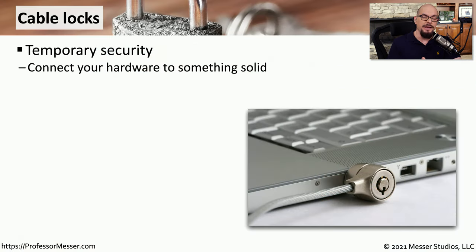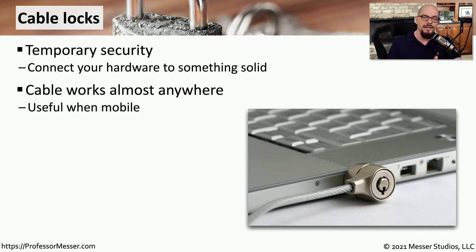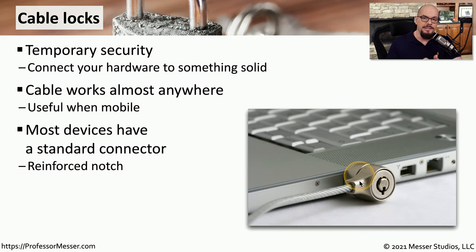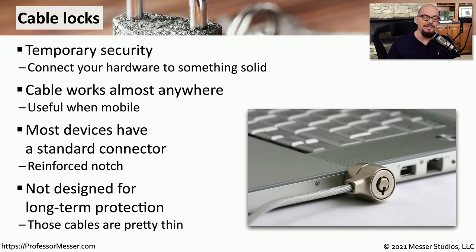Cable locks are often used to prevent a piece of equipment from being stolen in an area. These are usually temporary locks that can be connected to almost anything around you. For example, you may connect a cable lock to a laptop and then connect the other end to something sturdy that can't be moved, such as the leg of a table. This is a standard connector with a reinforced notch, and if you look at your laptop, you'll probably see a notch on the side perfectly sized to fit one of these cable locks. This is not built for long-term protection and could be cut with the right equipment, but it's a great temporary deterrent.